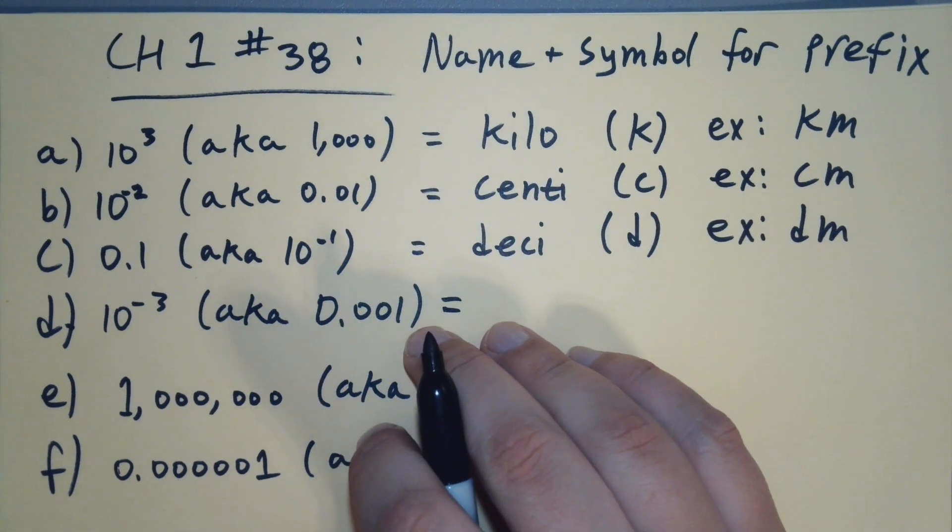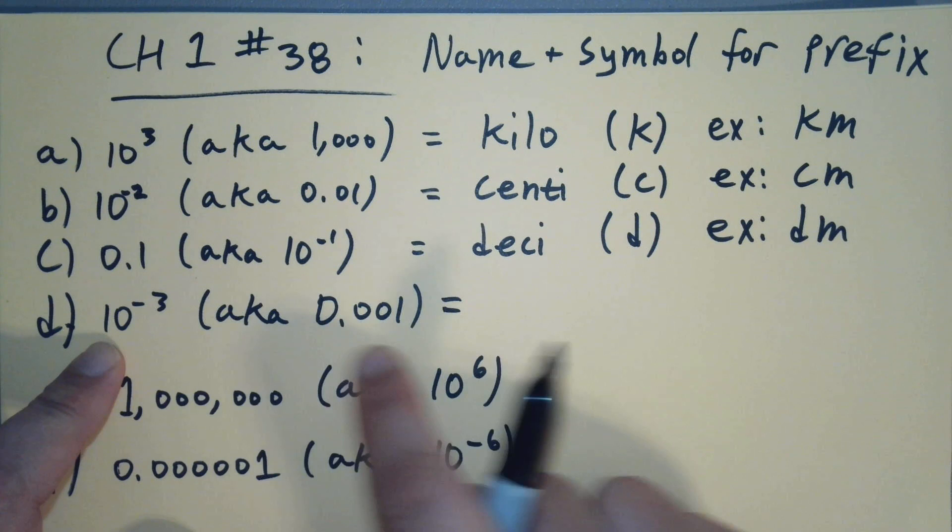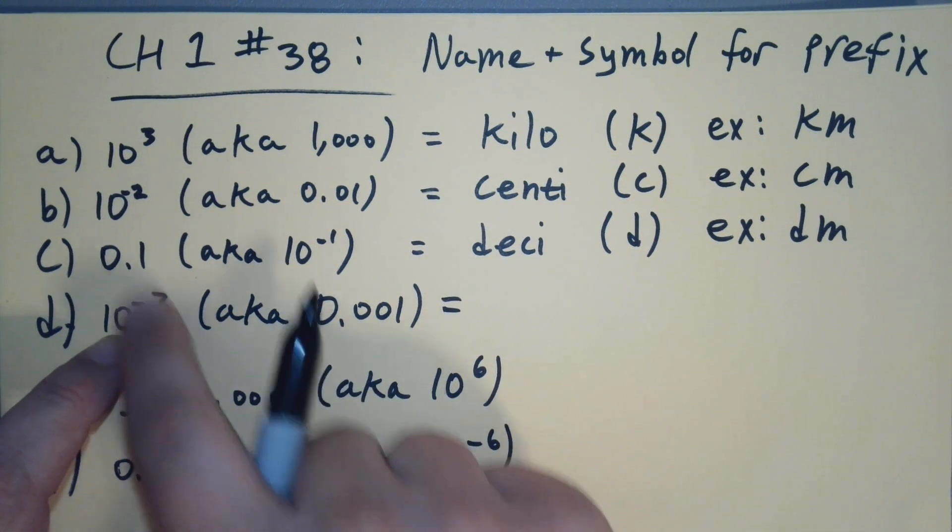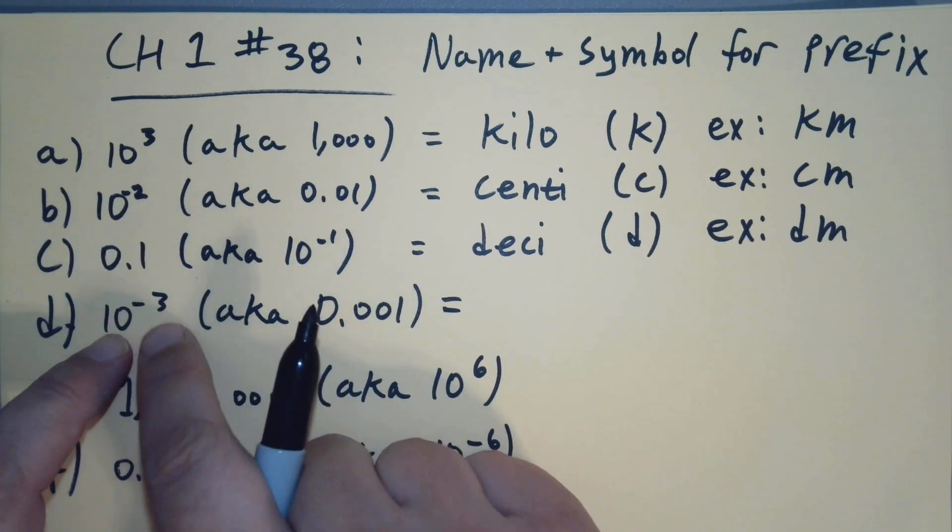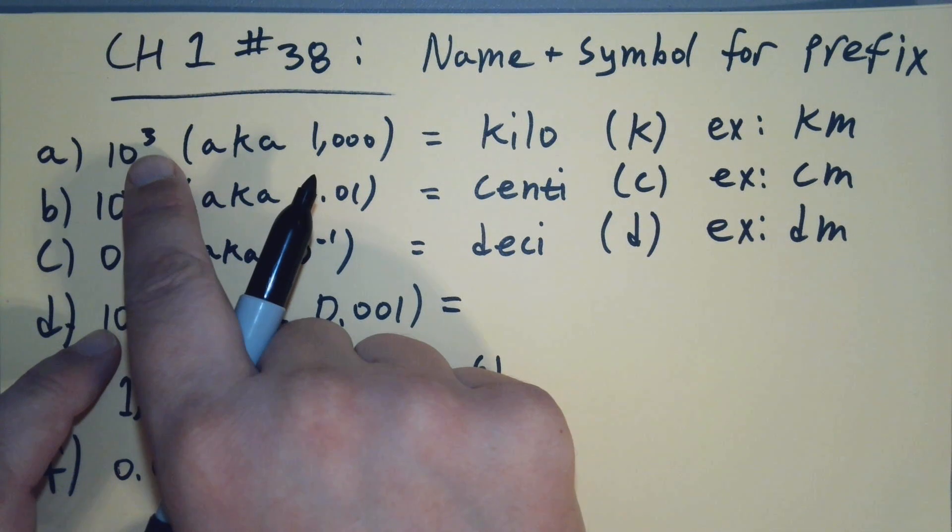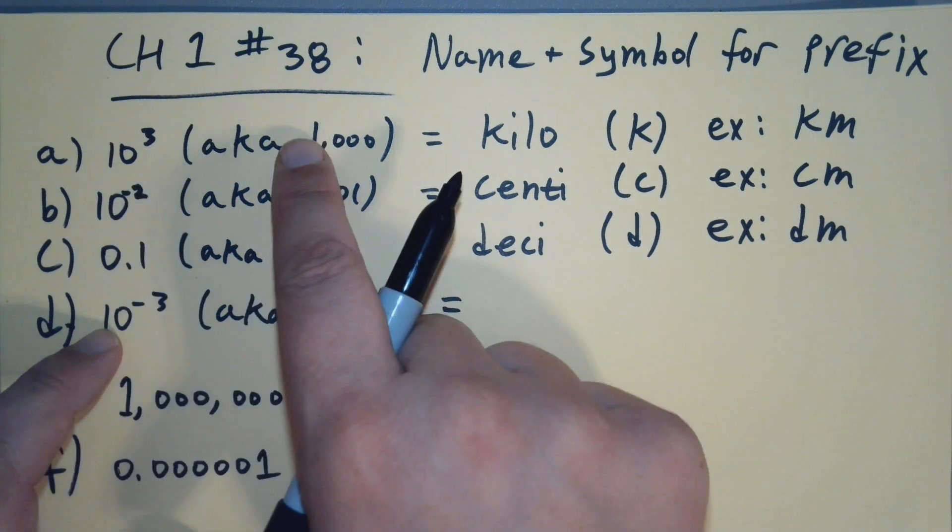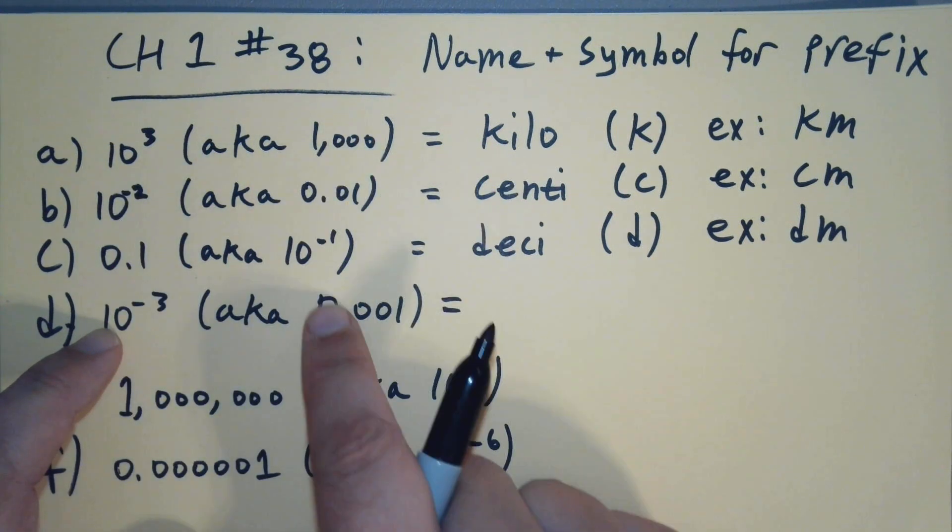So now we have 10 to the minus 3, or 0.001. So this is 1/1,000. If 10 is a negative power, it's a small number, it's less than 1. And if 10 is a positive number, it is greater than 1. So this is like a thousand, this is 1/1,000th. You can see the relationship, right? We're going left from the decimal, we're going right from the decimal.